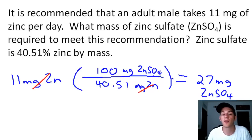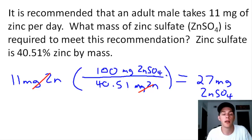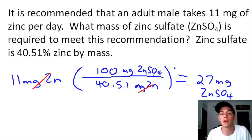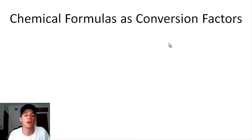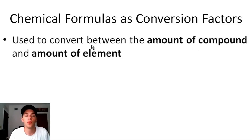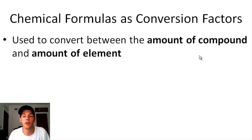That is how you use mass percent composition as a conversion factor. There's also another way to convert from the mass of an element to the mass of a compound without calculating mass percent composition — and that is to use chemical formulas as conversion factors. You can use a chemical formula to convert between the amount of a compound and the amount of an element in it. Remember that amount is different from mass: mass is in grams or kilograms, while amount refers to moles or molecules.